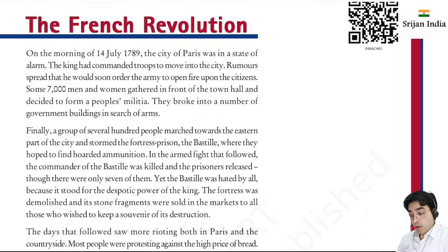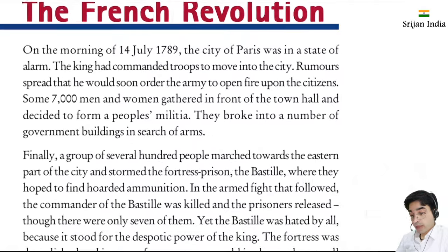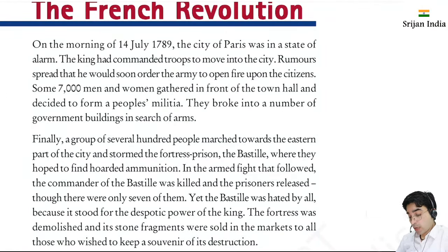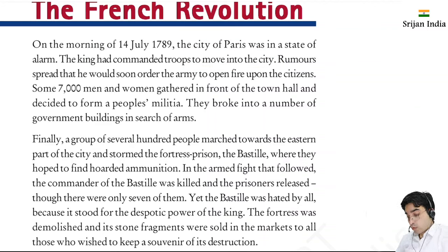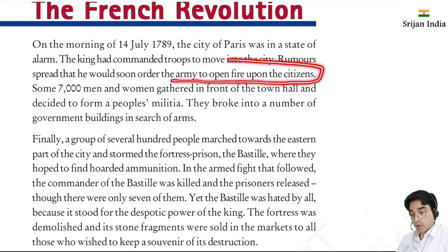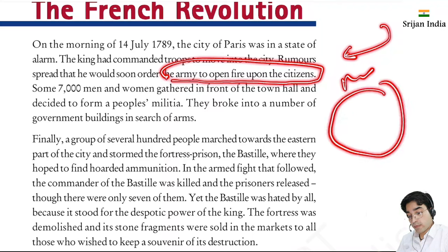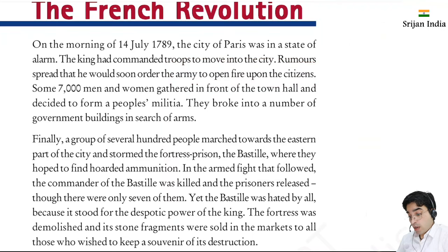The French Revolution - on the morning of 14 July 1789, the city of Paris was in a state of alarm. The king had commanded the troops to move into the city. Rumors spread that he would soon order the army to open fire upon the citizens. Around 7,000 men and women gathered in front of the town hall and decided to form a people's militia.